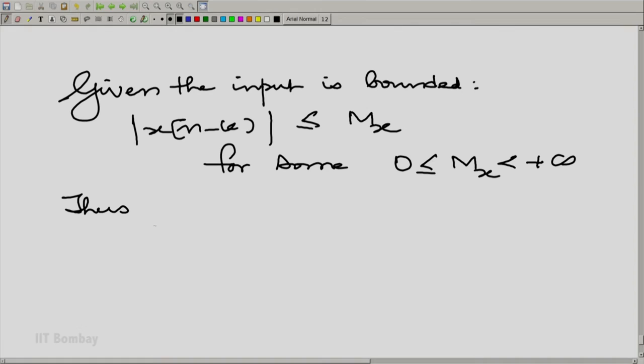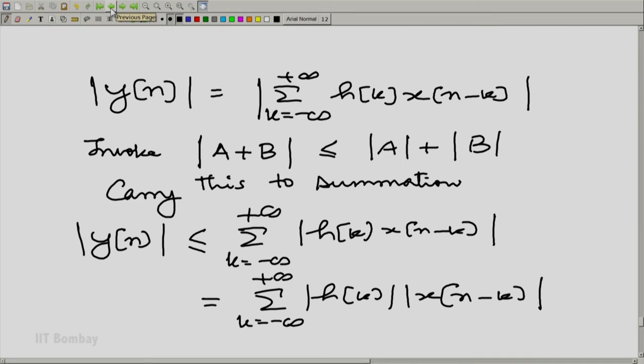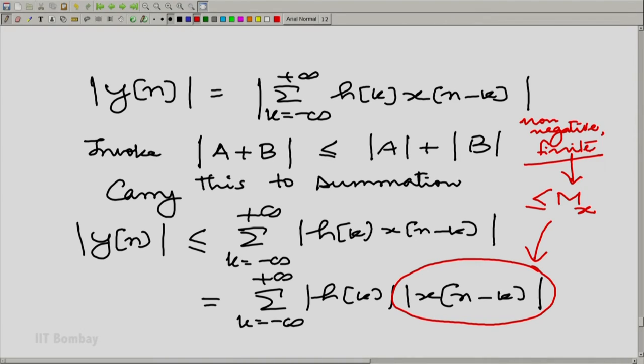For some M_x strictly less than plus infinity and greater than or equal to zero. In fact, let us go back to what we wrote previously. That will be easier. You see, if you look at it, this quantity is less than or equal to M_x.